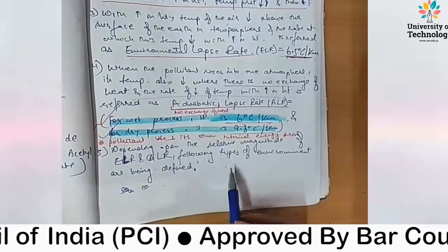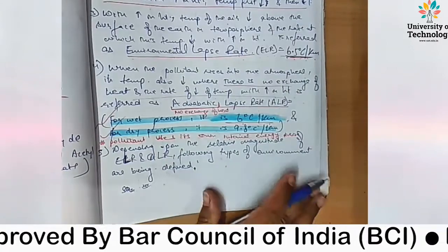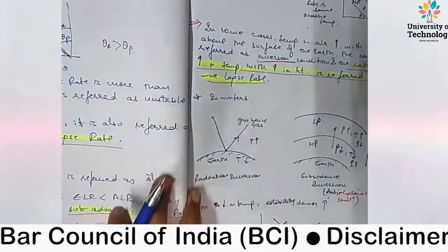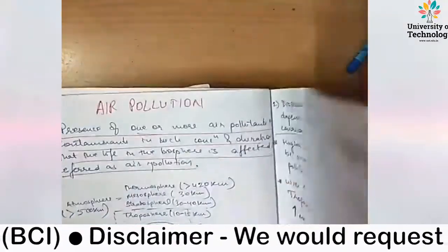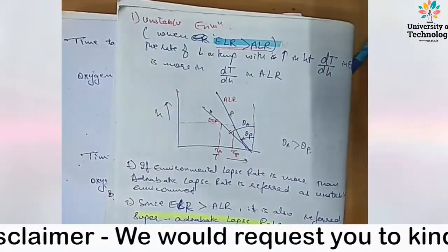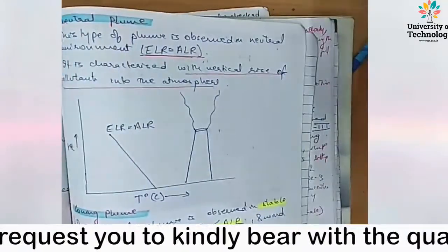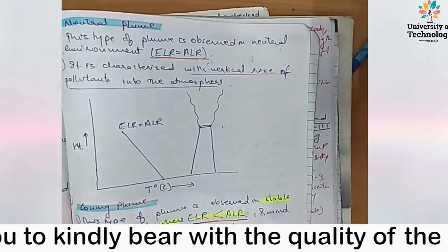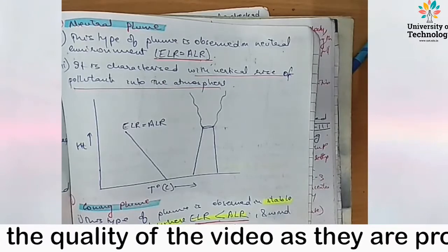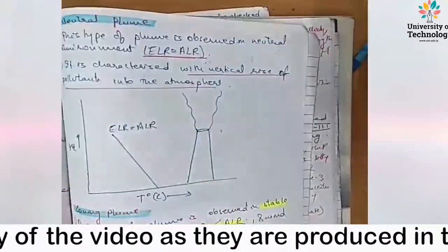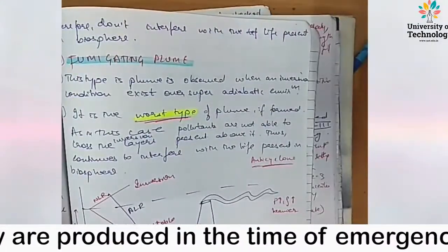Depending upon the relative magnitude of ELR and ALR, the following types of atmospheric environments are defined: unstable environment, stable environment, and neutral environment. Under these, various plume behaviors are observed — looping plume, coning plume, and neutral plume. We will study these in detail in our next lecture.